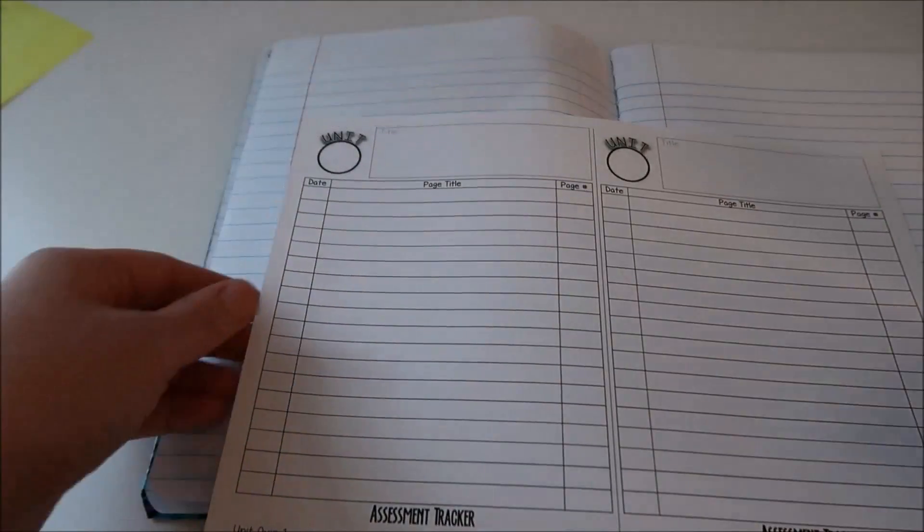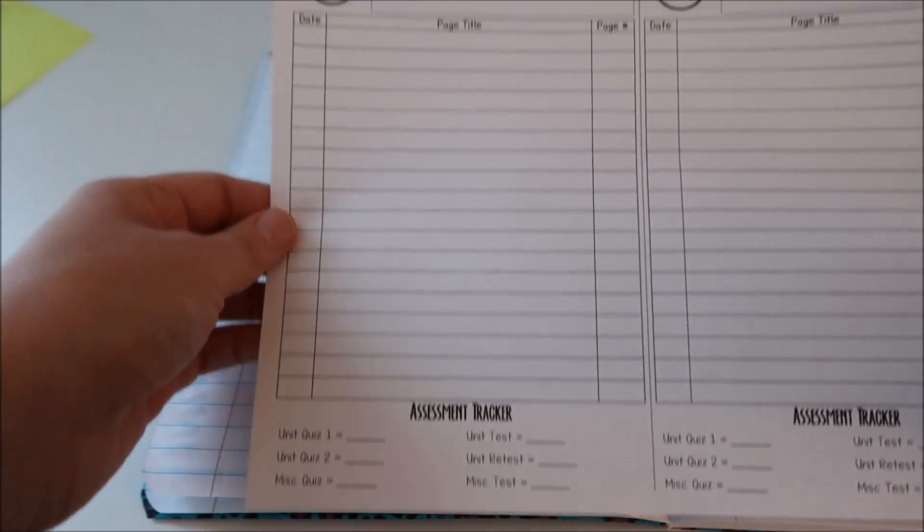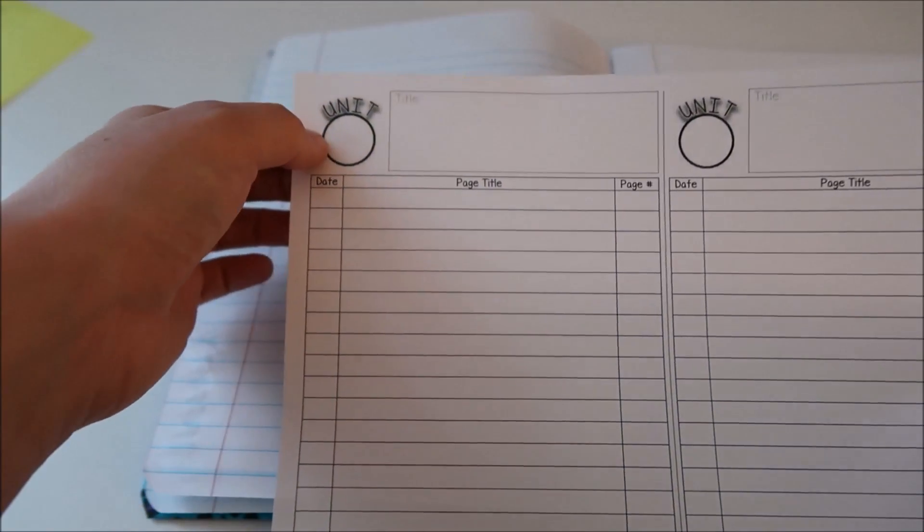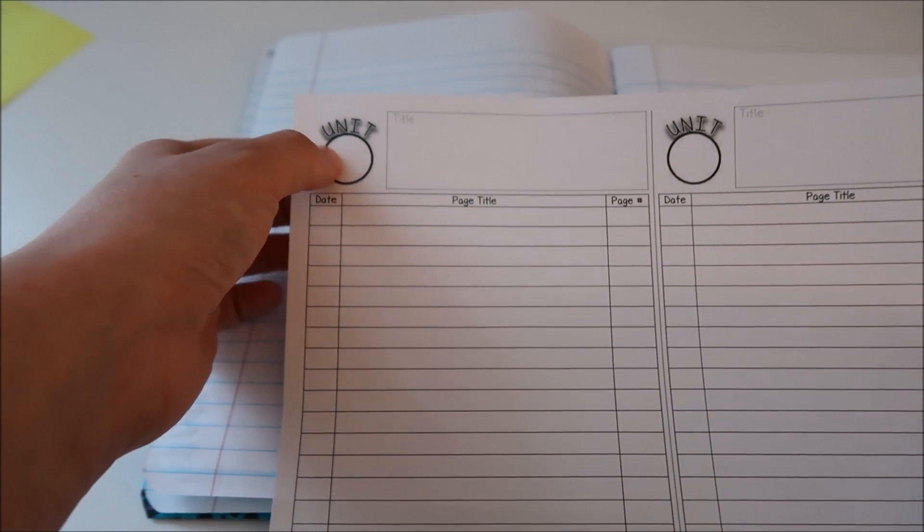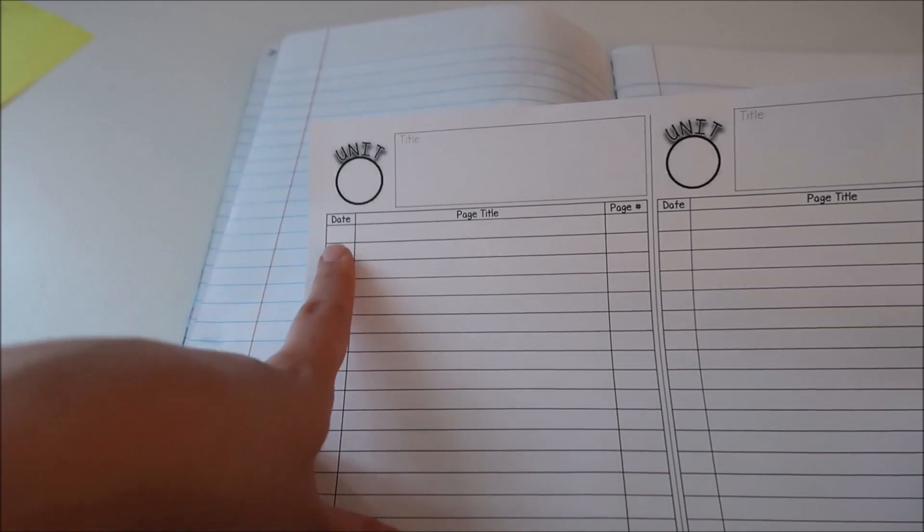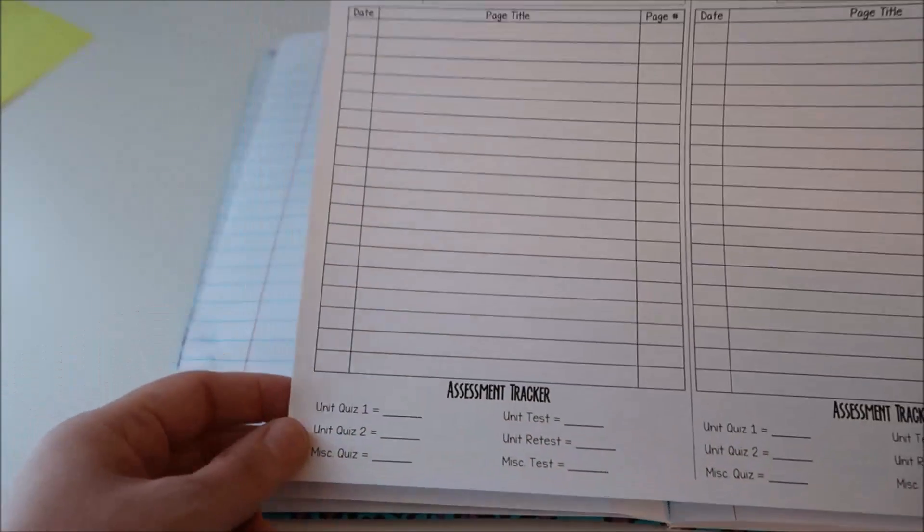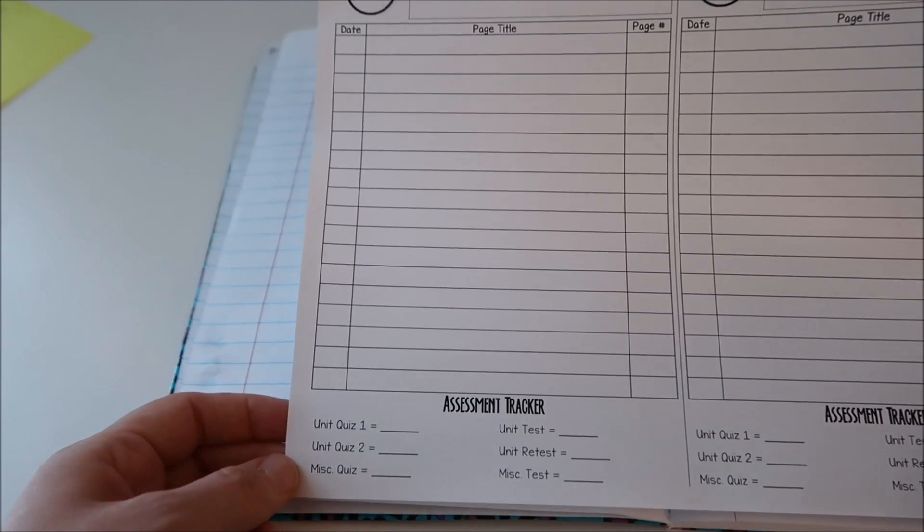After my pocket page I have a table of contents page. So this is what my table of contents page looks like. In this circle students put the unit number, we write out the title in here and then as we're adding pages we write in the date, the page title and the page numbers. And down here we have an assessment tracker for students to keep track of their grades.